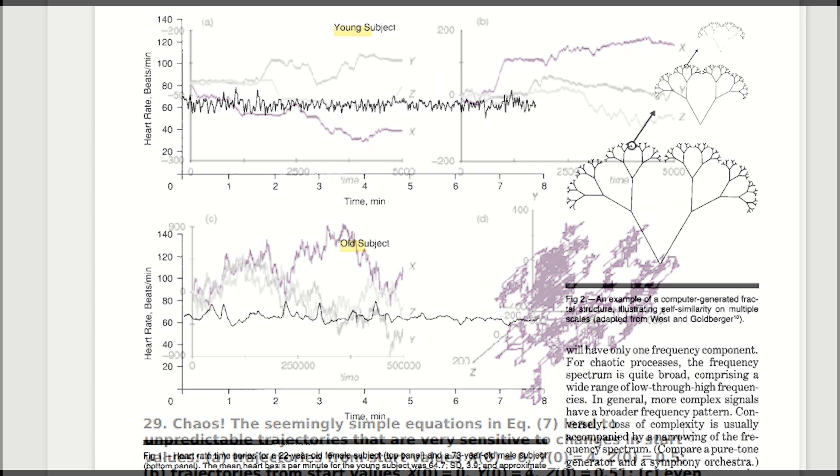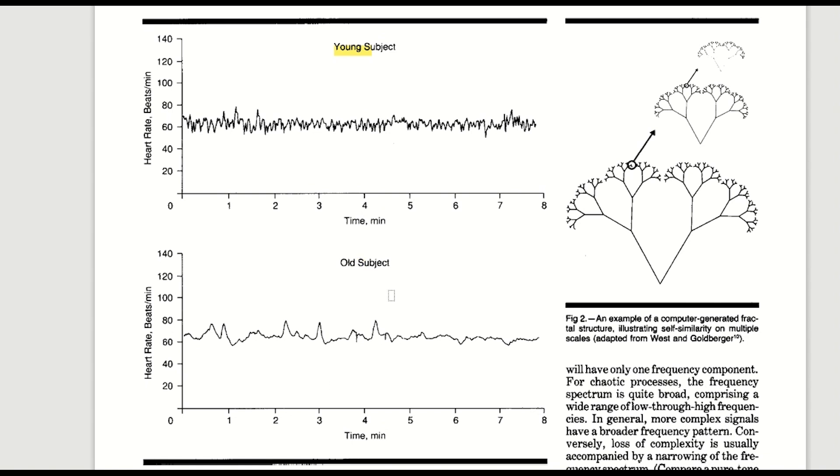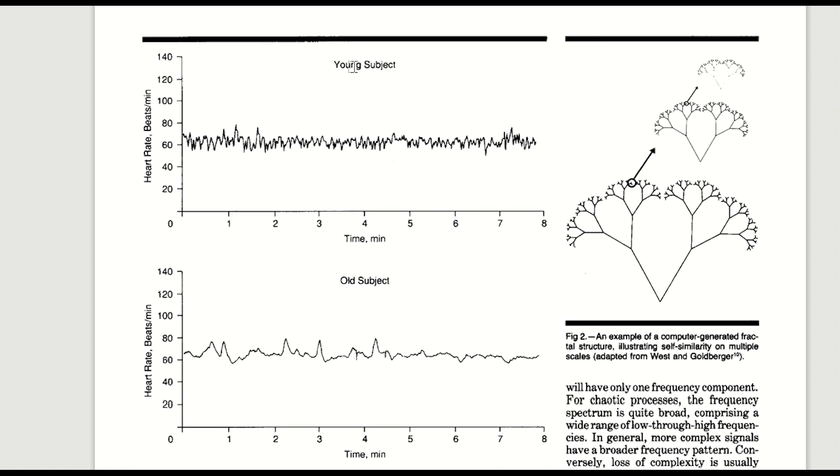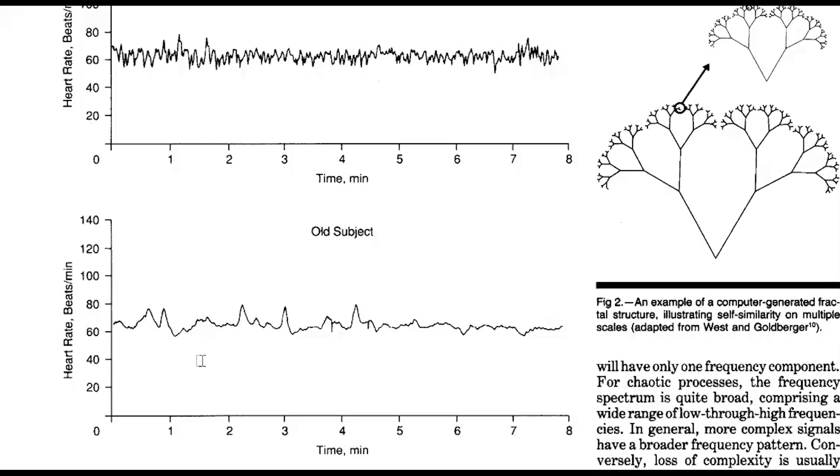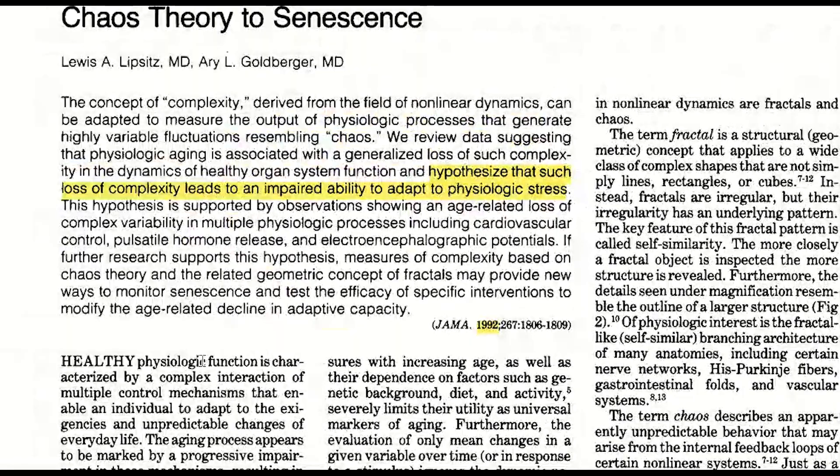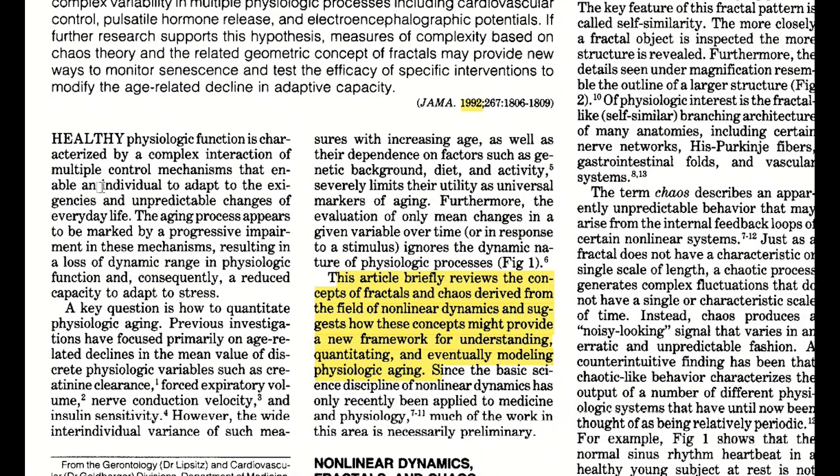Now, like with the heart rates we saw earlier, you might be thinking, why would biological systems employ such chaotic systems? Well, although the answer is not clear, as Lewis Lipsitz states, it seems it can enable an individual to adapt to the unpredictable changes of everyday life.